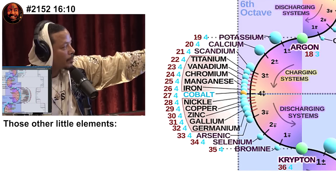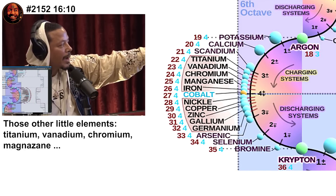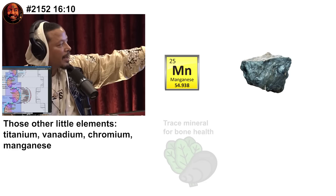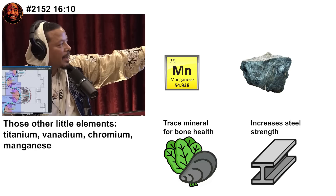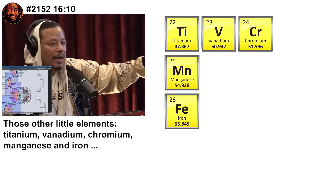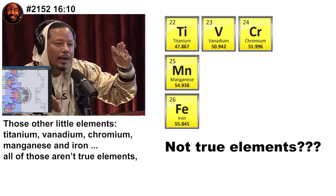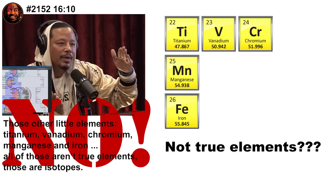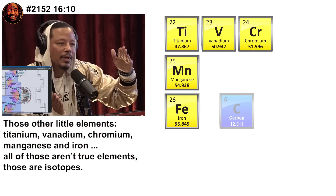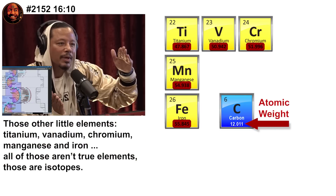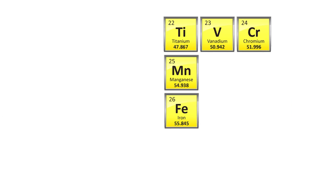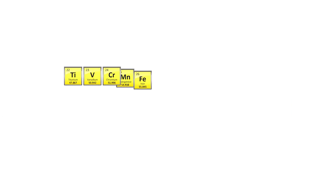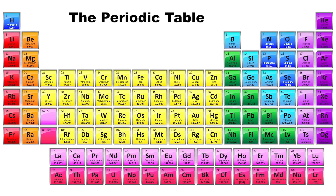Those other little elements — titanium, vanadium, chromium, manganese — it's pronounced manganese, by the way — and iron: Terence claims those aren't true elements, those are isotopes. Just no. Of course titanium and iron are elements. And calling them little? They're all at least four times the mass of carbon. Before I can explain why these are not isotopes, I need to fill you in on the basics — the genius of the Mendeleev periodic table.